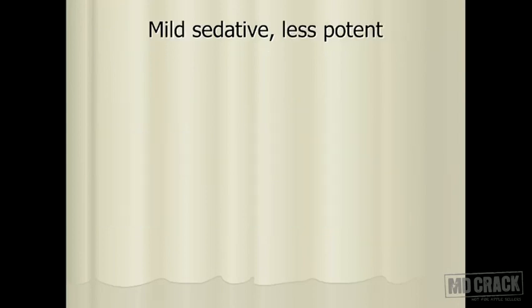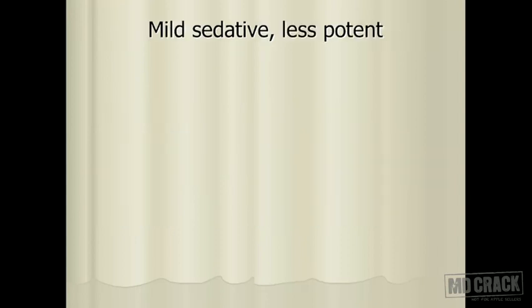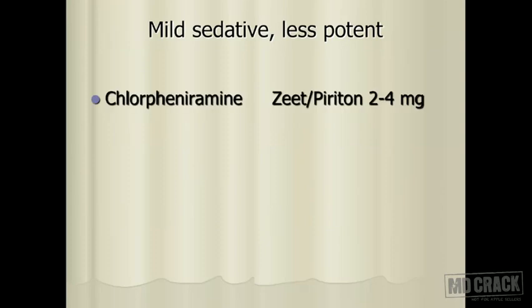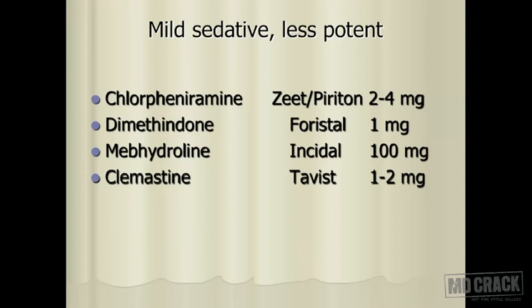Just a reminder: cyproheptadine also has a 5-HT2 blocking property — it is also an anti-serotonin agent. The third group is mildly sedative and less potent, and includes chlorpheniramine, dimethindene, mebhydrolin and clemastine. That covers generation 1 antihistamines.